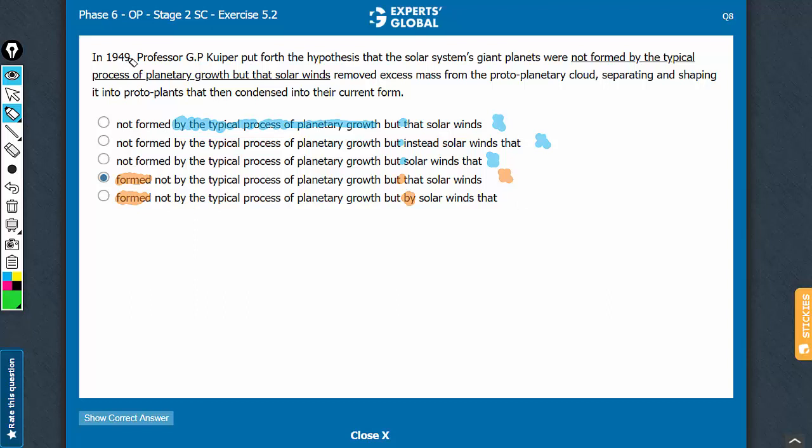In 1949, put forth the hypothesis that the solar system's giant planets were formed not by the typical process of planetary growth, but by solar winds that removed excess mass from something and as a result, separating and shaping something. Makes complete sense. E is the correct answer choice here.